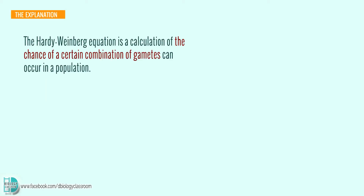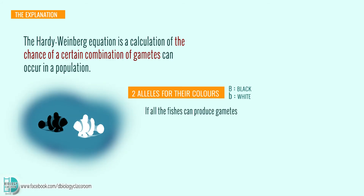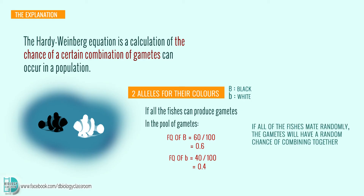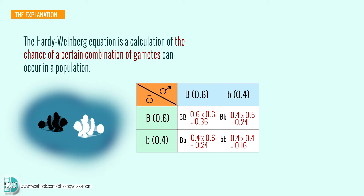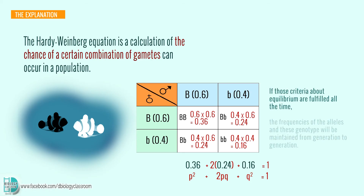The Hardy-Weinberg equation calculates the chance of a certain combination of gametes occurring in a population. In the example, if all fish can produce gametes, the gamete pool will have frequencies of big B equals 0.6 and small b equals 0.4. When all fish mate randomly, gametes combine randomly. We can use a Punnett square to predict the likelihood of different outcomes: one homozygous dominant, two heterozygous, and one homozygous recessive. Multiplying the gamete frequencies gives the frequency of each genotype, and their sum is 1. If the equilibrium criteria are fulfilled, these allele and genotype frequencies are maintained from generation to generation.